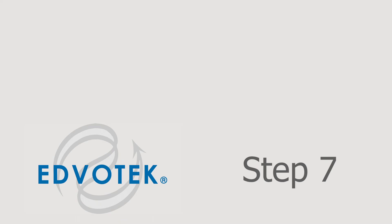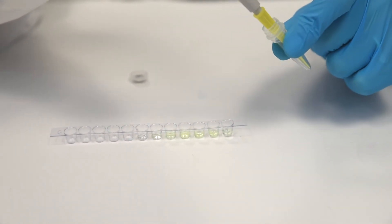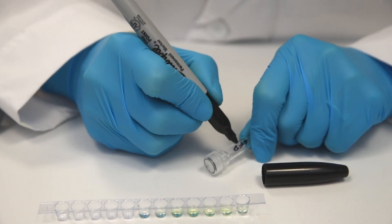Step 7: Transfer 30 microliters of the brightest elution into a screw-top microcentrifuge tube. Label the tube GFP native.